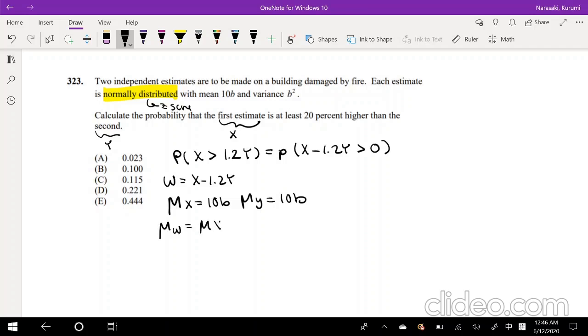We know that the mean of X is 10B. And we also know that the mean of Y is also 10B. And so in order to find the mean of W, which is equal to the mean of X minus 1.2 mean of Y, we just have to plug that in. So this is equal to 10B minus 1.2 times 10B, which can also be rewritten as 10B minus 12B, which is just equal to negative 2B.